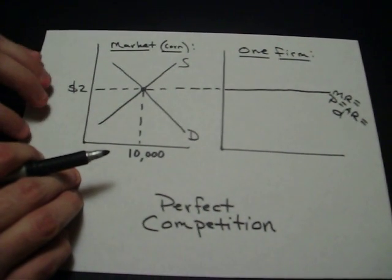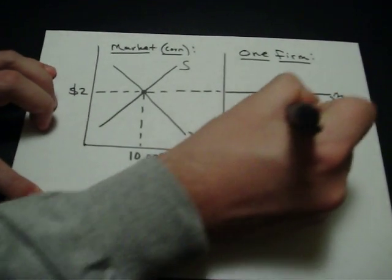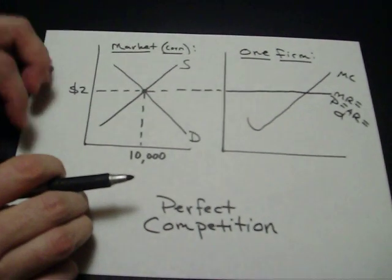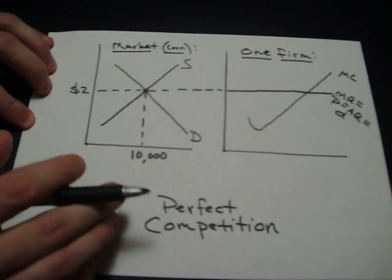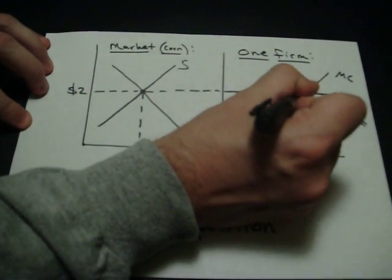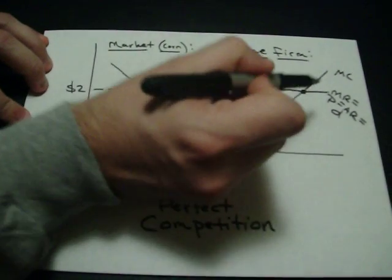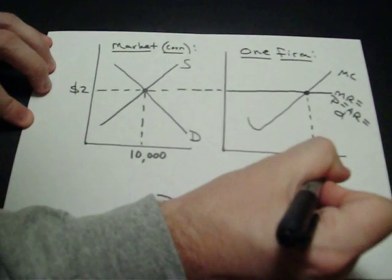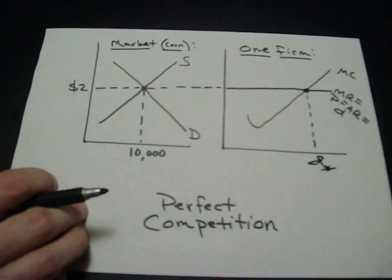Hopefully you know what marginal cost looks like. It looks like a Nike Swoosh or a check mark. The rule is, in every single market, they produce up to the point where MR equals MC. That's how they determine maximum profit. So trace down, I get the ultimate quantity, Q star. That's the quantity that's going to maximize profits.